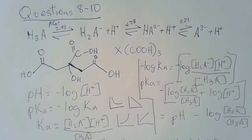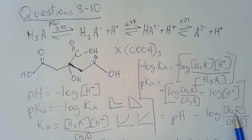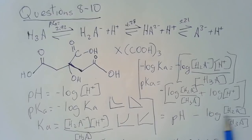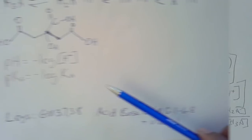This also helps with question 10. If the proportion of the deprotonated form increases, that number in the log term gets larger, and since you're subtracting it from pH, pKa ends up lower. This is another way to prove that pKa will decrease — confirming answer 10B.